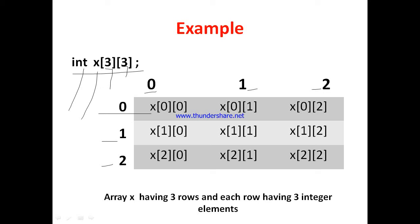This memory location is represented using x[0][0]. This is x[0][1], x[0][2]. This is x[1][0], [1][1], [1][2]. Here [2][0], [2][1], [2][2]. We can see here array having 3 rows and each row having 3 integer elements. Why? Because the data type is int.